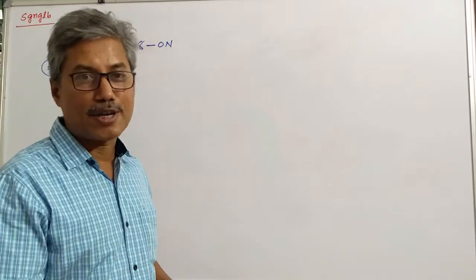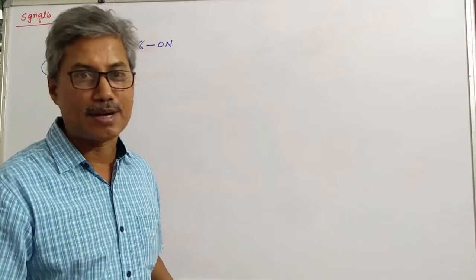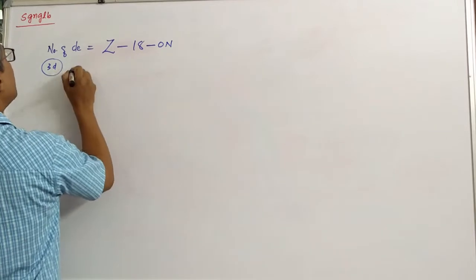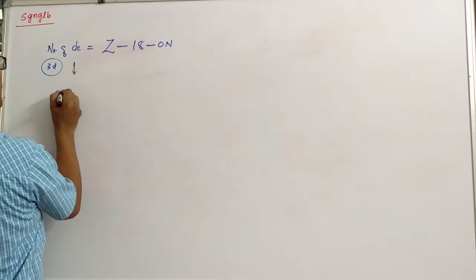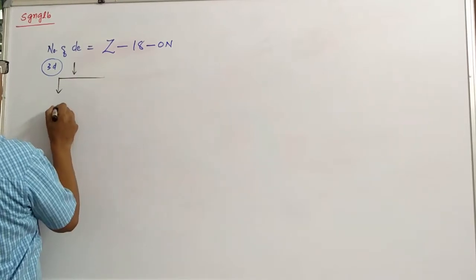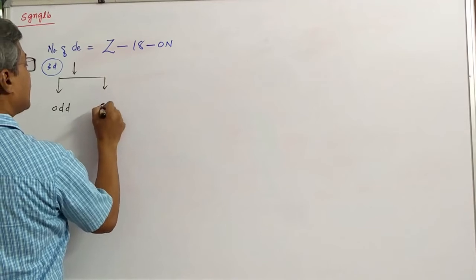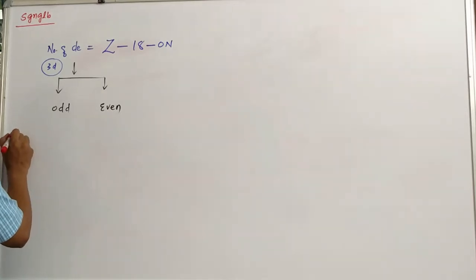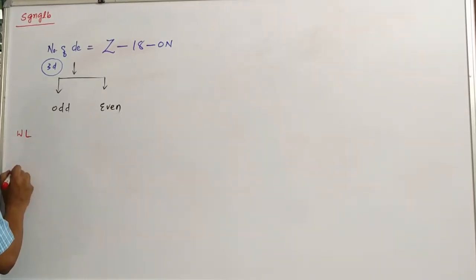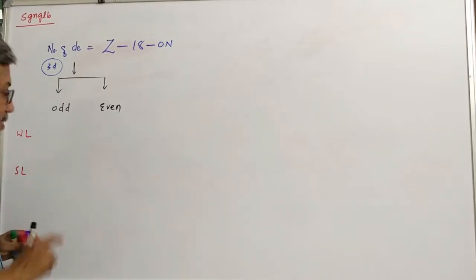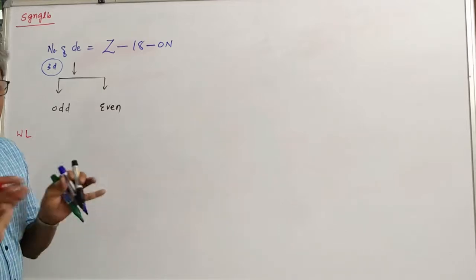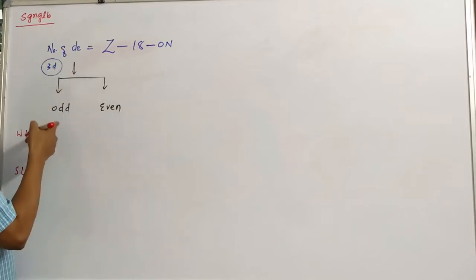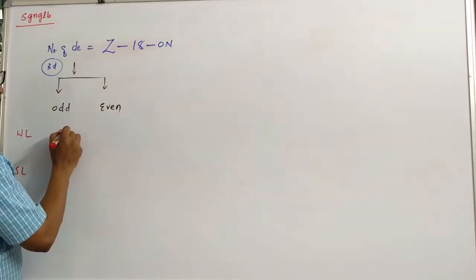This information, along with the following, will help us find out all those properties very easily. This number can be either odd or even. There are two types of ligands: weak ligands and strong ligands. If it is a weak ligand and the number of D electrons is odd, then it will be surely paramagnetic.